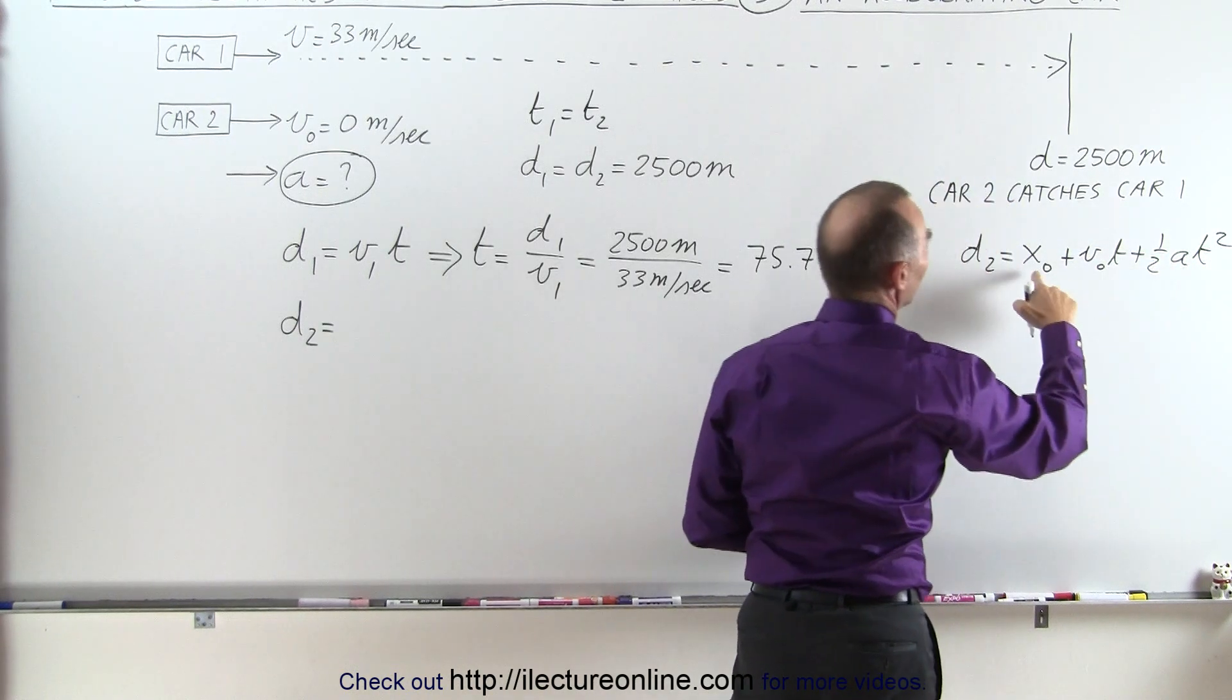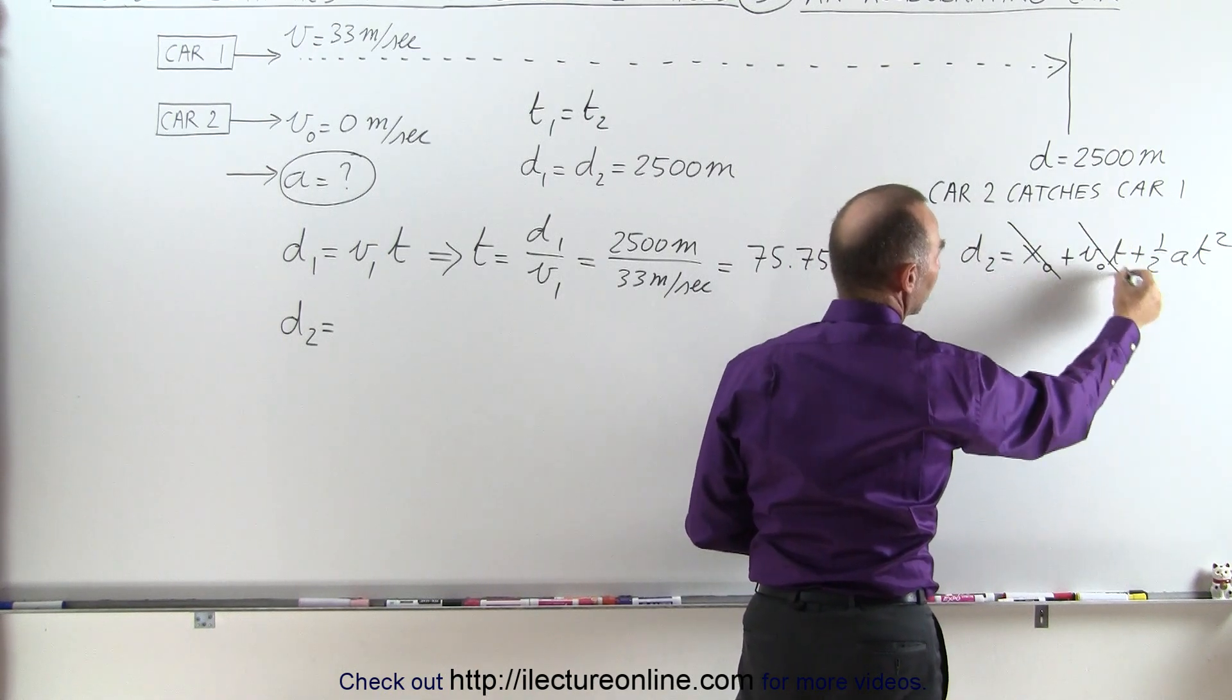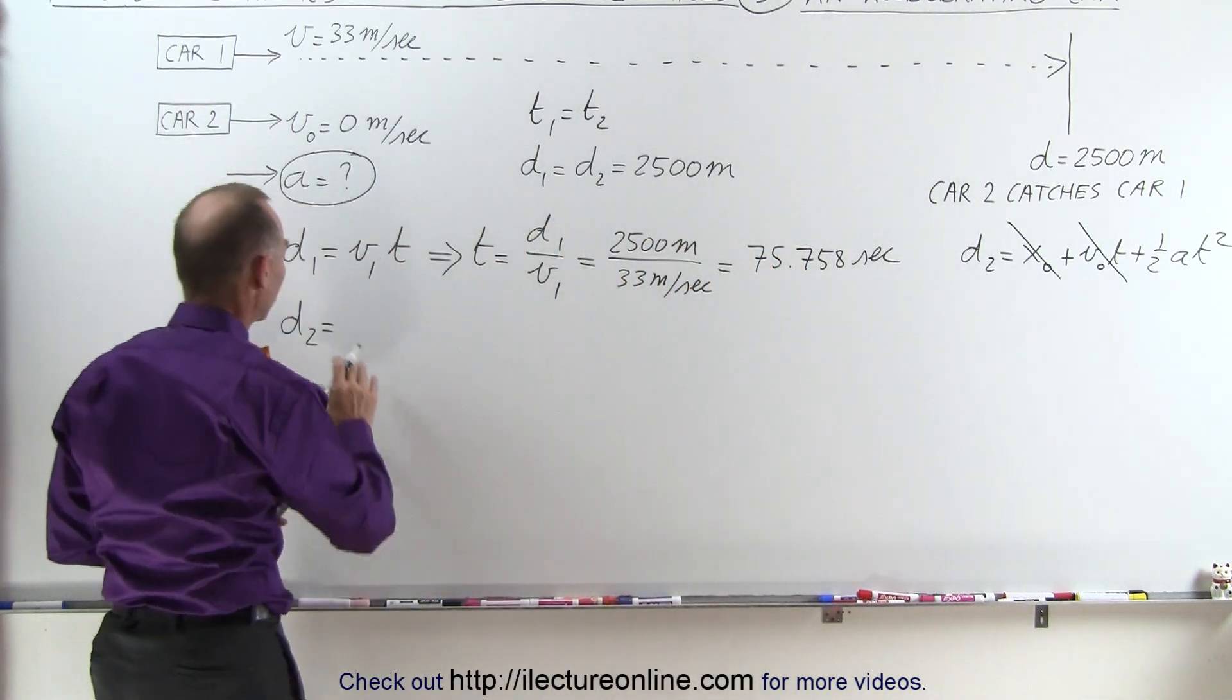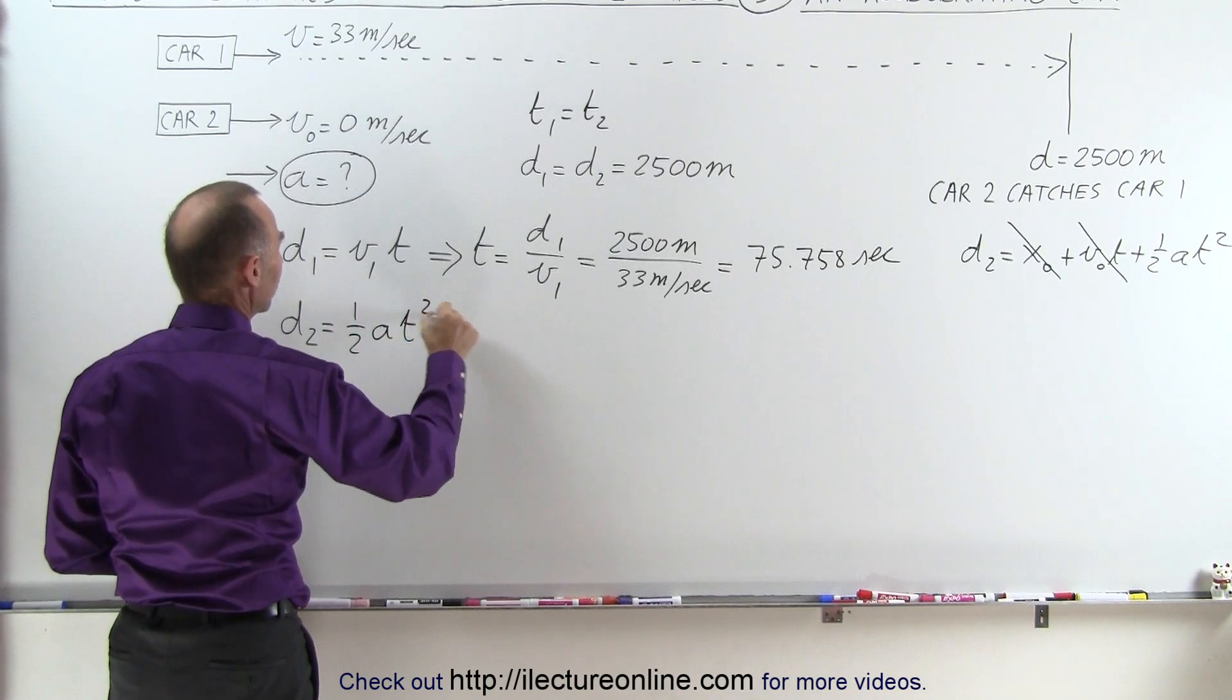But since there's no distance traveled at time equals 0, this goes to 0, and there's no initial velocity for car 2, so therefore it only depends on the acceleration term. So distance 2 is going to be equal to one half the acceleration times the time squared.